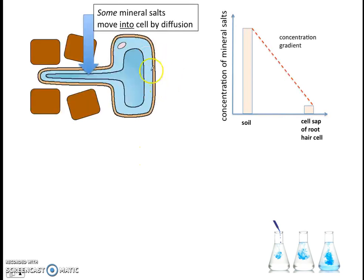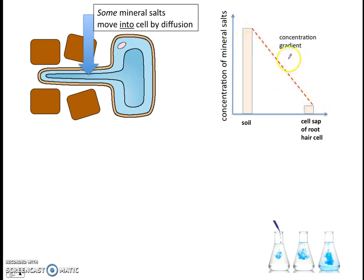In order to understand active transport, we need to revisit our root hair cell. Remember that root hair cells can absorb some mineral salts by diffusion, because the concentration of mineral salts was very high in the soil and very low inside the root hair cell. So there was a concentration gradient, and the root hair cell can absorb the mineral salts by diffusion down the concentration gradient — this didn't require any energy.